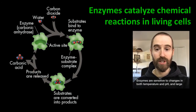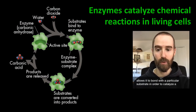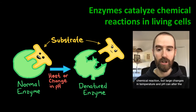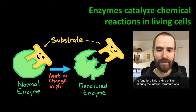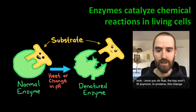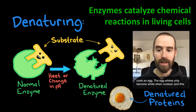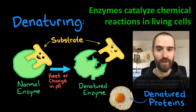Enzymes are sensitive to changes in both temperature and pH, and large fluctuations in these can affect how well our enzymes function, or even whether they are able to function at all. The shape of an enzyme is what allows it to bond with a particular substrate in order to catalyze a chemical reaction. But large changes in temperature and pH can alter the shape of an enzyme and may prevent it from being able to function. This is kind of like altering the internal structure of a lock — once you do that, the key won't fit anymore. In proteins, this change in shape is called denaturing, and is actually what happens when you cook an egg. The egg whites only become white when cooked, and this change in appearance and texture is due to the denaturing of proteins found in eggs.